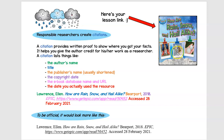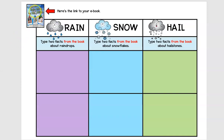So raindrops, snowflakes, hailstones — H-A-I-L — hailstones are made out of ice from the sky. We're going to be using this note-taking guide; your link is going to be right up here. You're going to be reading about rain, snow, and hail, and in these colored blocks in the columns, this one says to type two facts from the book about raindrops.